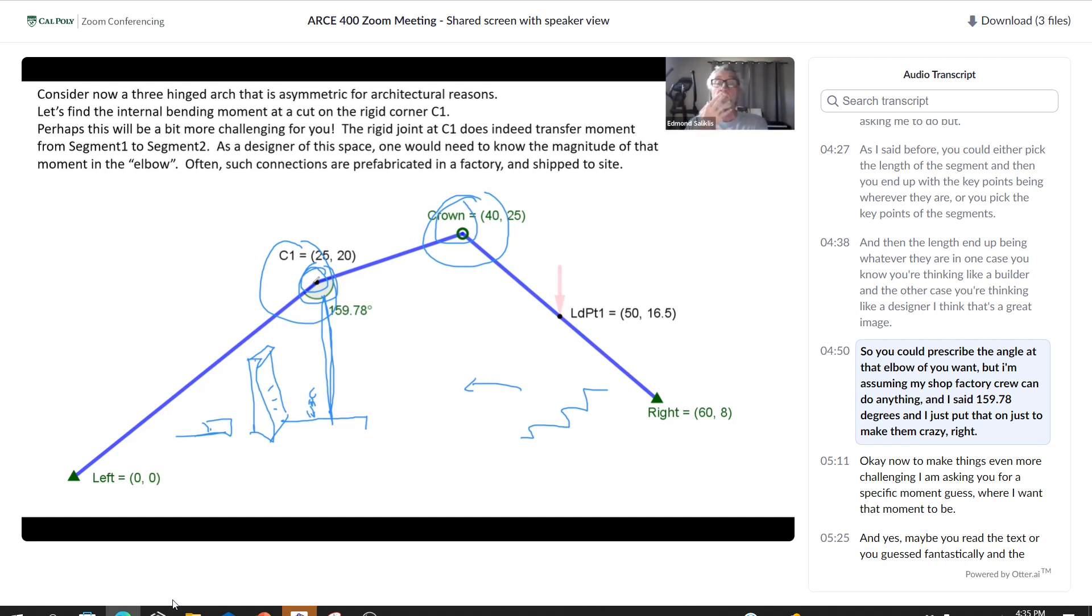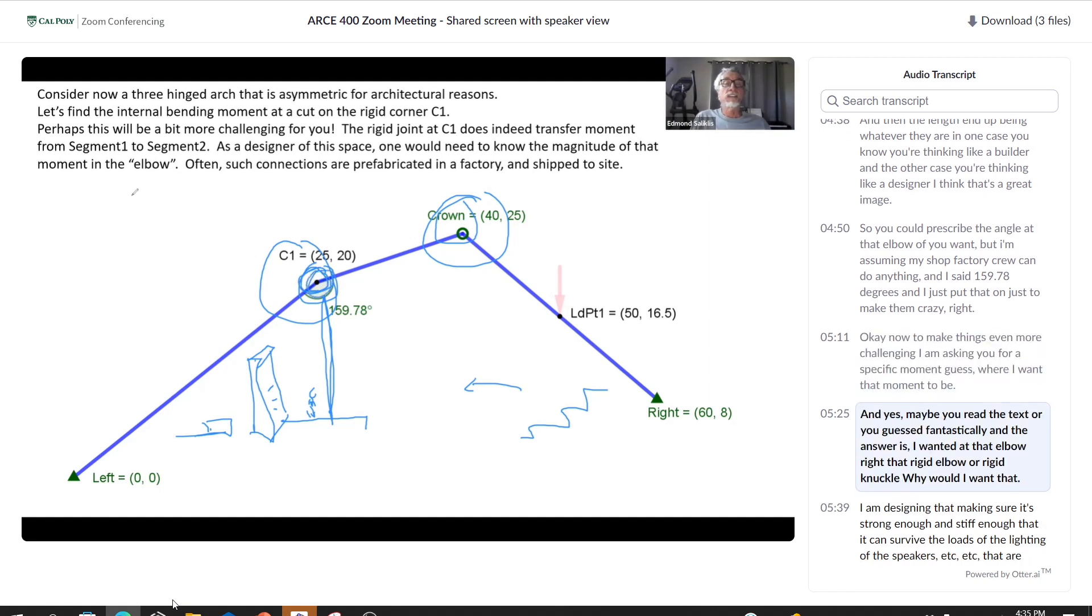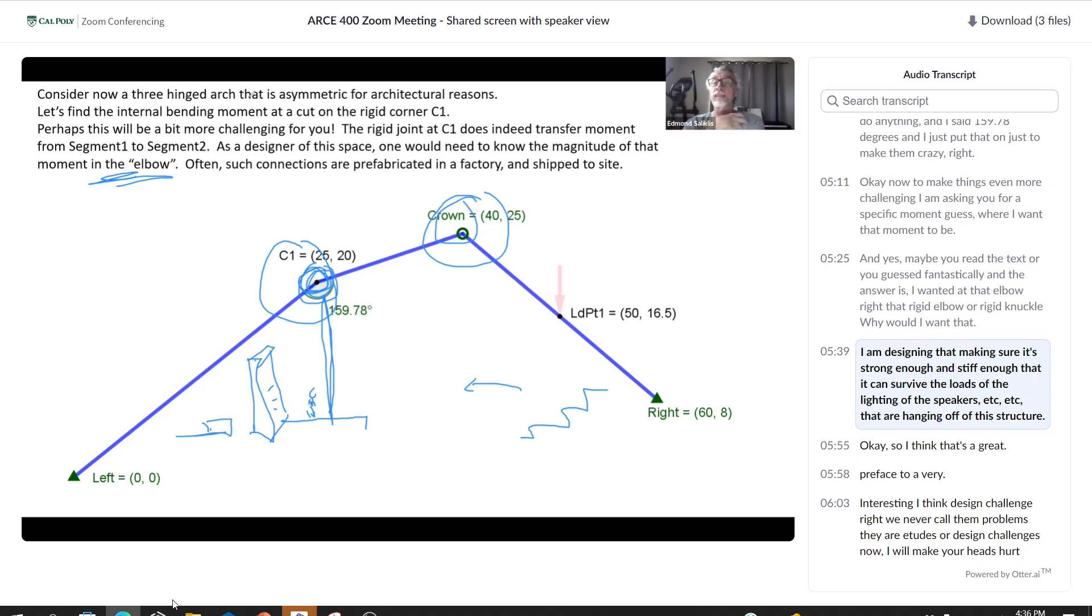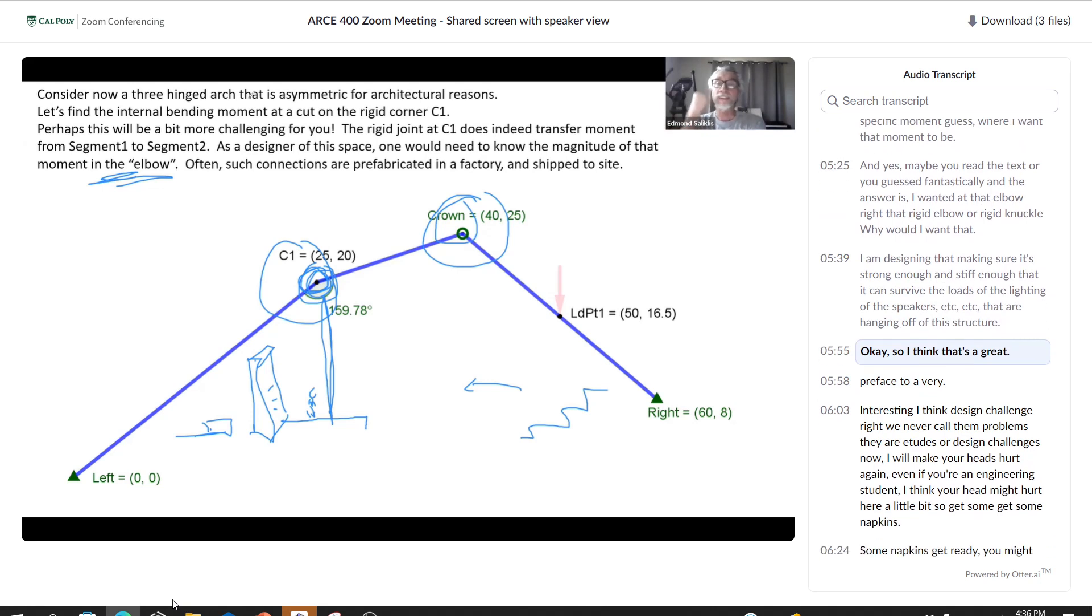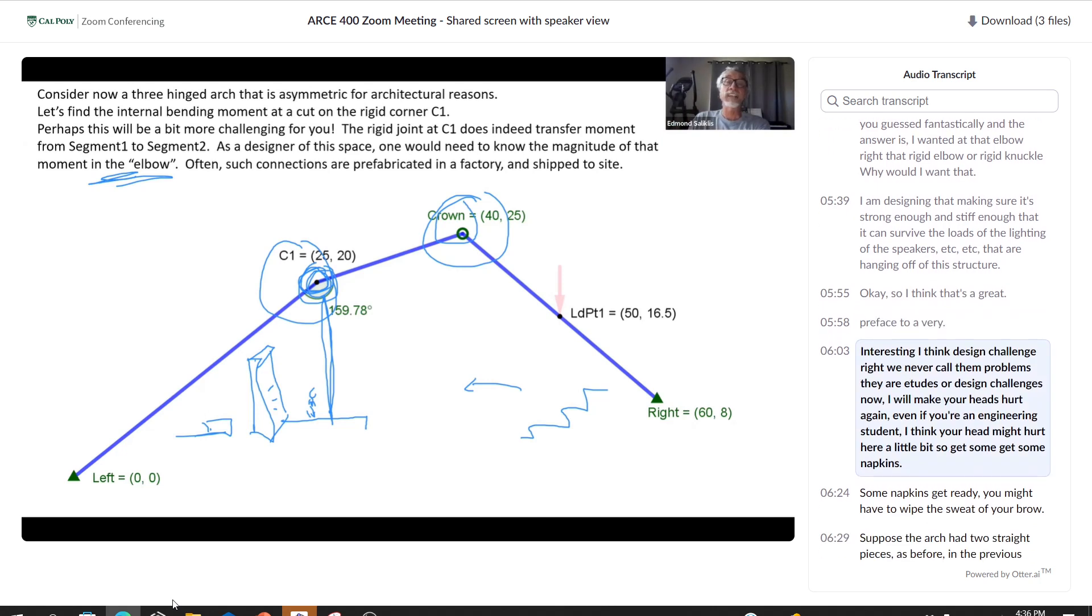To make things even more challenging, I am asking you for a specific moment, guess where? I want it at that elbow, that rigid elbow or rigid knuckle. Why would I want that? I am designing that, making sure it's strong enough and stiff enough that it can survive the loads of the lighting, of the speakers, et cetera, that are hanging off of this structure. So I think that's a great preface to a very interesting design challenge.